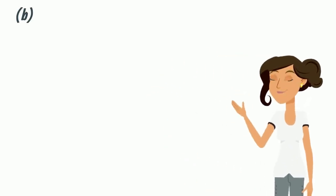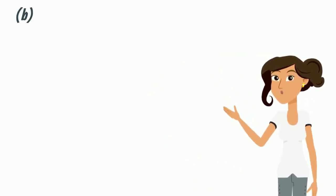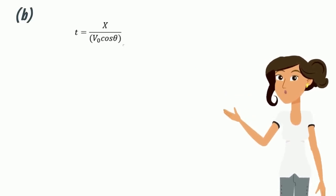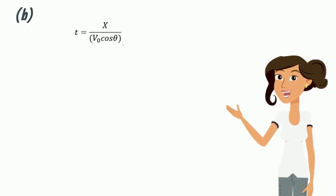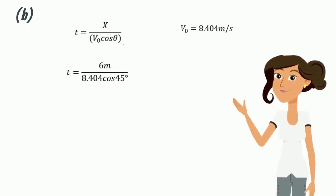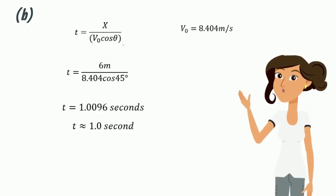For b, to find the time, we use back the time equation we derived earlier, which is t equals x over v0 cos theta. And by substituting the final position, x equals to 6 m, and release velocity, 8.404 m per second, we can find time equals 1 second approximately.